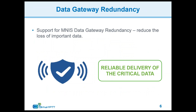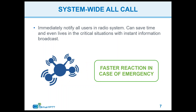The CMSS can have a redundant CMSS and we support operation with both. We also support redundancy with the MNLS data gateway, so if the primary goes down the secondary can pick up and you won't lose any important data. We also have a system-wide all-call feature, which can help save time in case of an emergency — rather than trying to send a message to multiple talk groups, you can do a system-wide all-call.